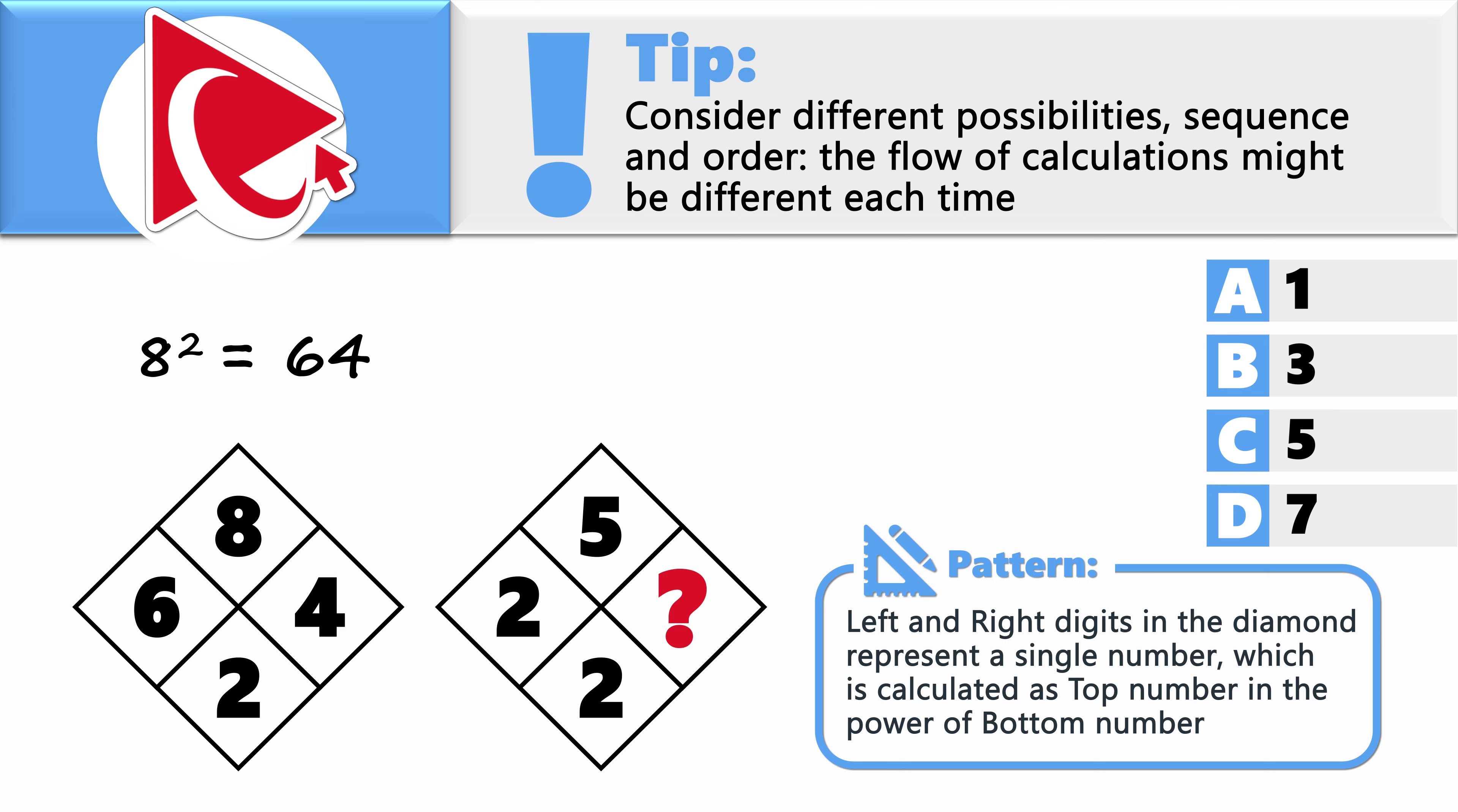Now let's look at the missing value. 5 in the power of 2 is 25. So the correct answer here is choice C, 5.